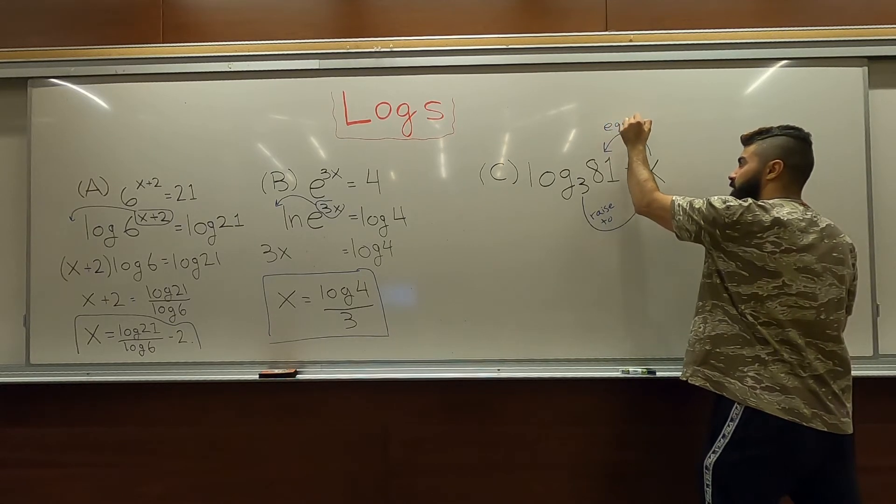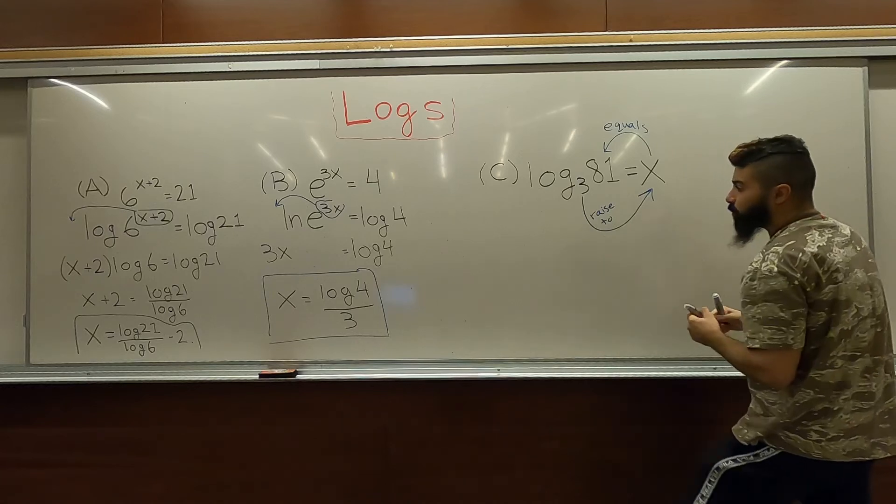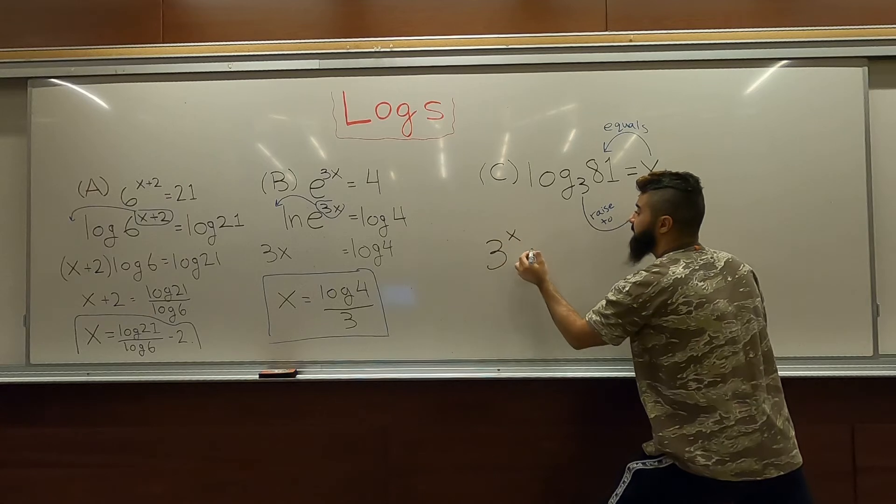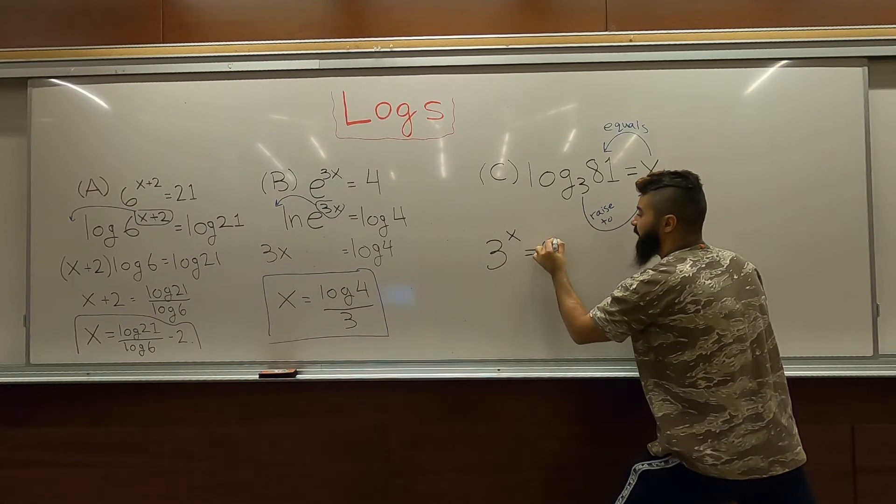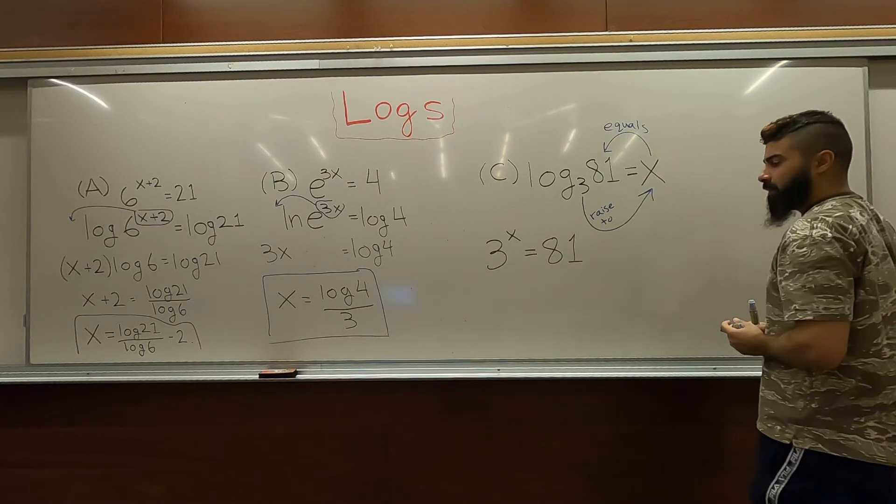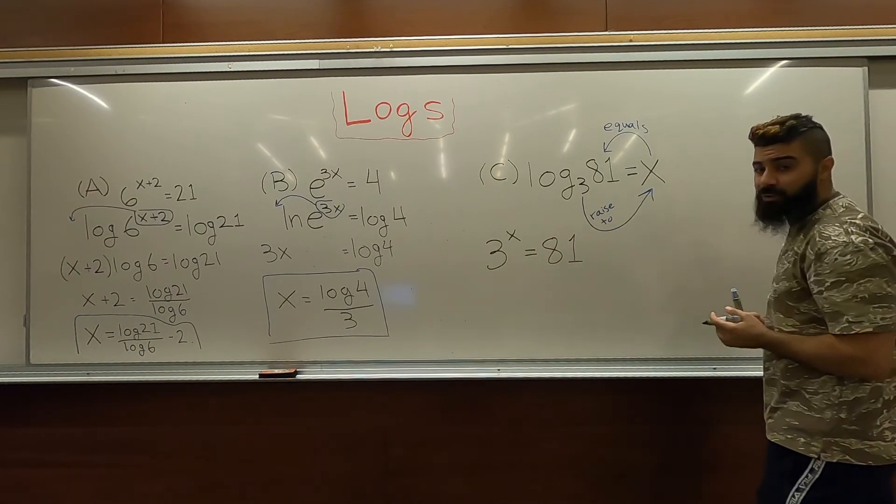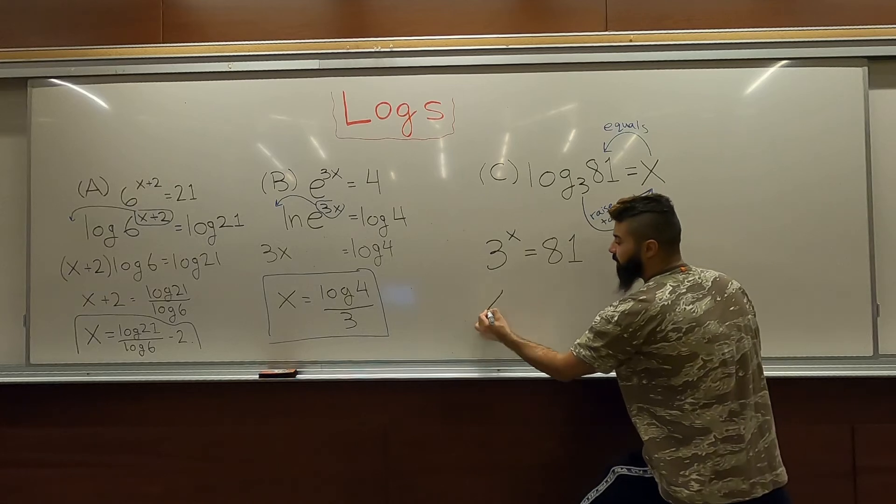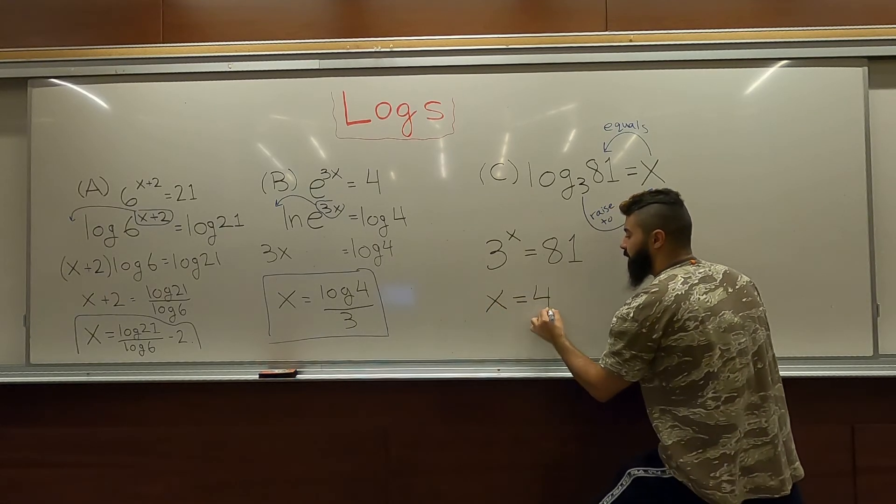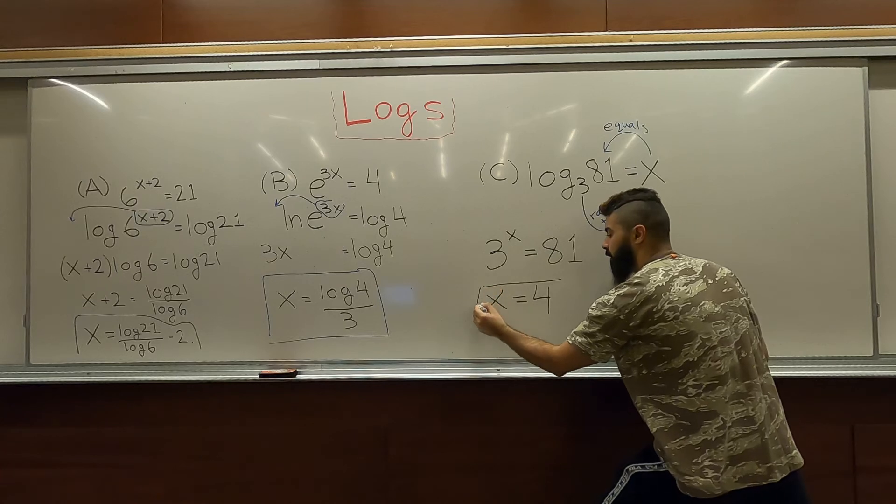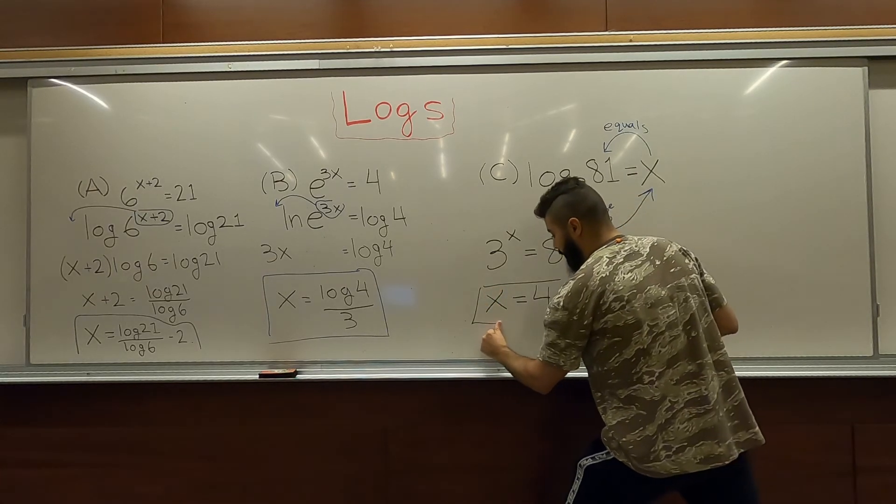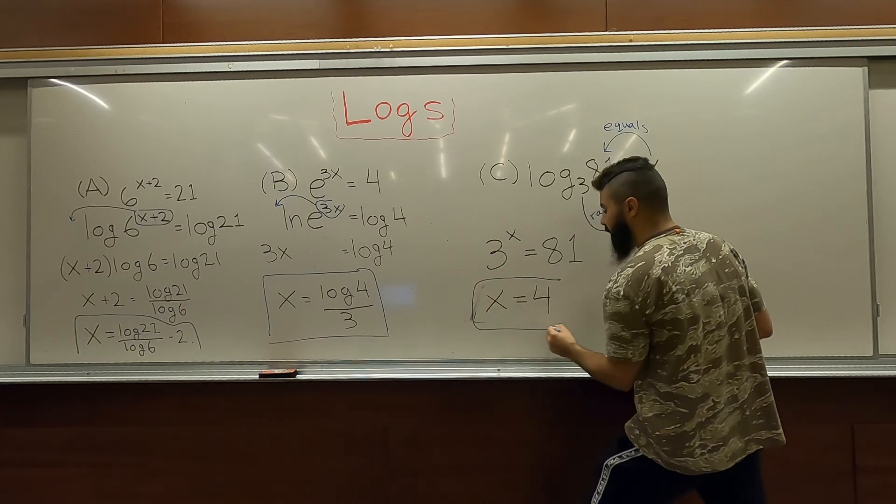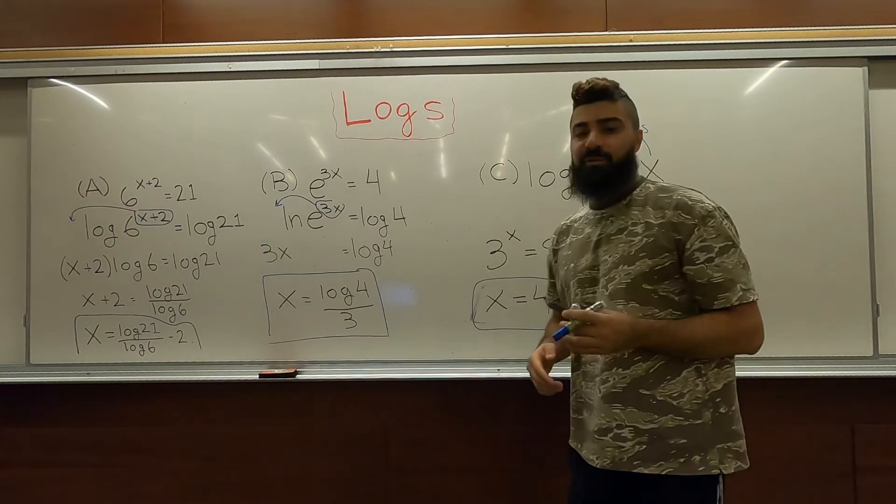So, in other words, 3 raised to the x is equal to 81. So, 3 to what power is equal to 81? We know 3 squared is 9, 3 cubed is 27, 3 to the 4th is 81. We've been using blue all along to box the answers. And x equals 4 is the answer for example c. And that's logs for you.